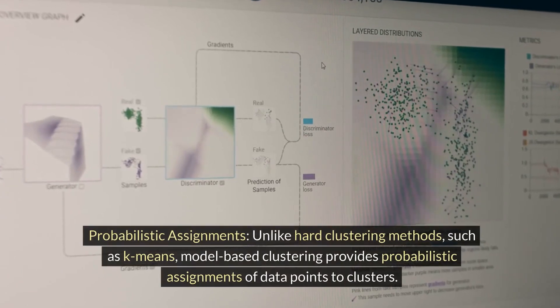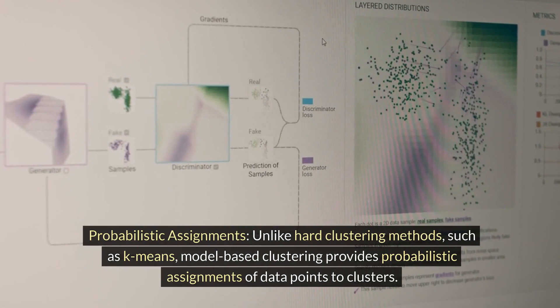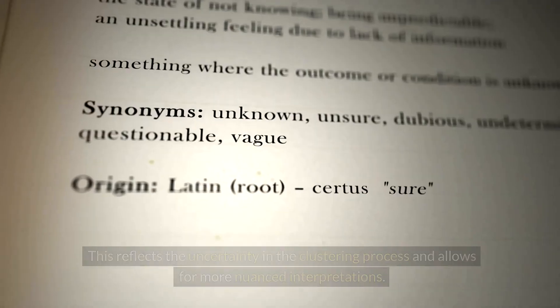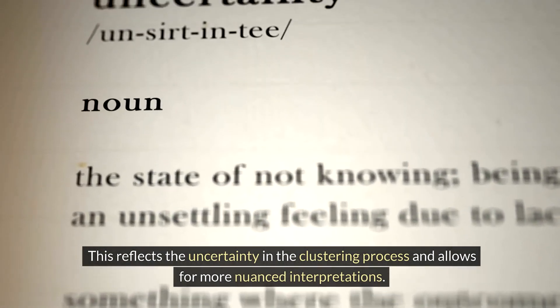Probabilistic assignments. Unlike hard clustering methods such as k-means, model-based clustering provides probabilistic assignments of data points to clusters. This reflects the uncertainty in the clustering process and allows for more nuanced interpretations.